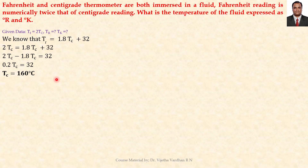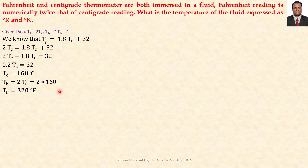The Fahrenheit temperature is twice that of the centigrade temperature, as given in the question. Substituting the centigrade temperature of 160°C into the equation, we get the Fahrenheit temperature as 320 degrees Fahrenheit.